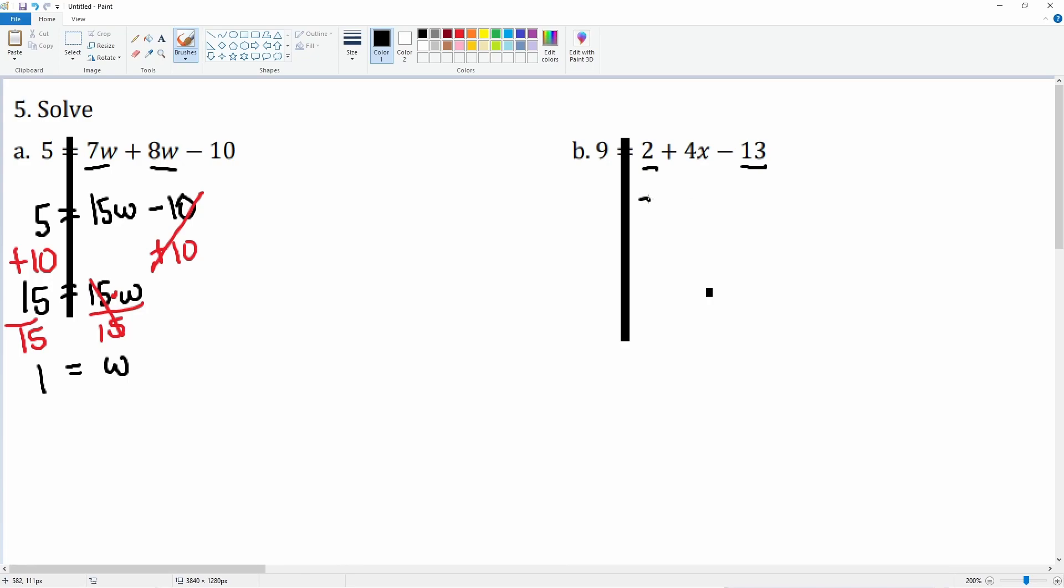So we have 9 equals negative 11 plus 4x. Now it becomes a two-step problem. How do you get rid of negative 11? We're going to add 11 to both sides.